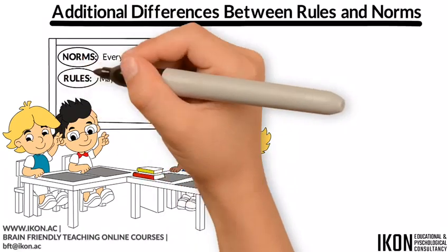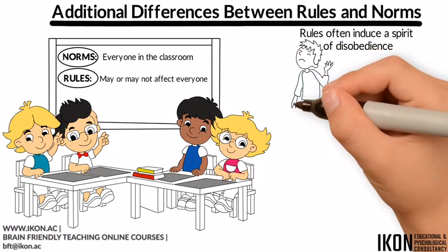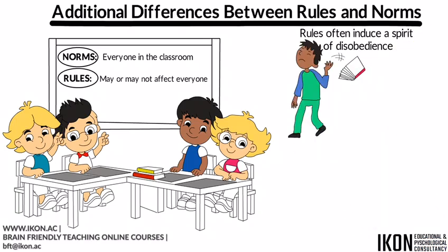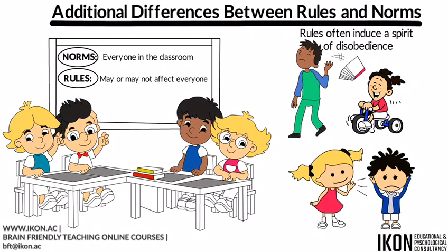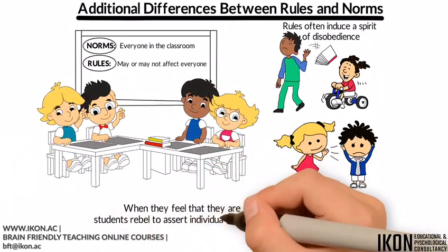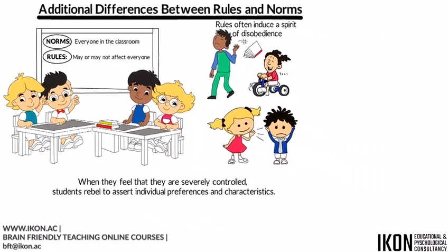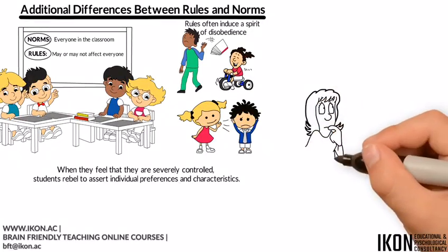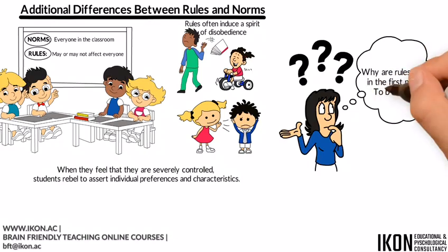A closer look at these two terms and how they operate in the real world reveals that rules often induce a spirit of disobedience. This spirit reveals the need for freedom in decision-making. It also reflects a craving for independence. Most defiant behaviors in the classroom can be attributed to the lack of a sense of independence in students. When they feel that they are severely controlled, students rebel to assert individual preferences and characteristics. Unfortunately, rules are often approached with the following mentality by many students, both young and old: Why are rules made in the first place, to be broken?